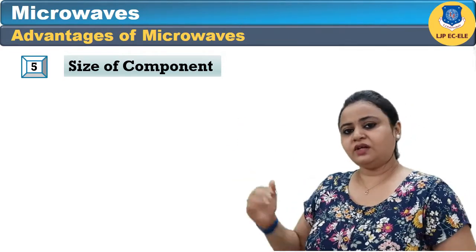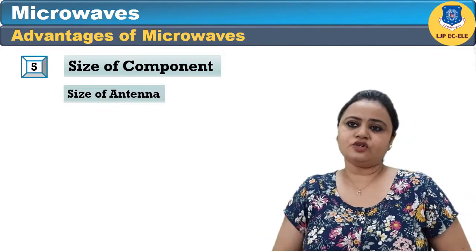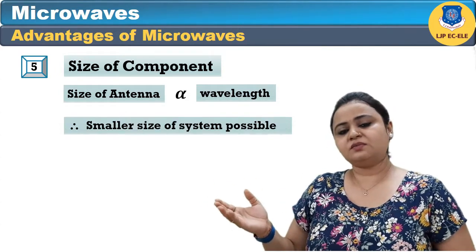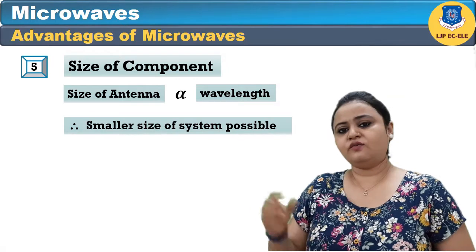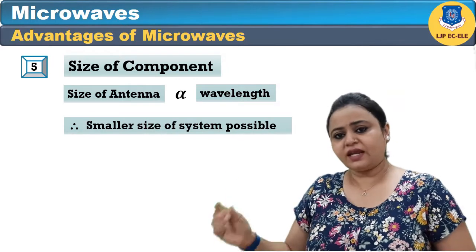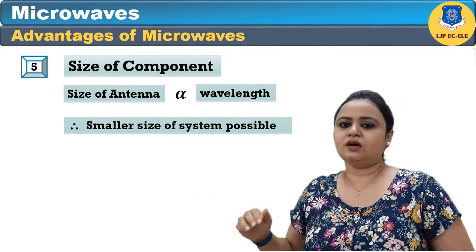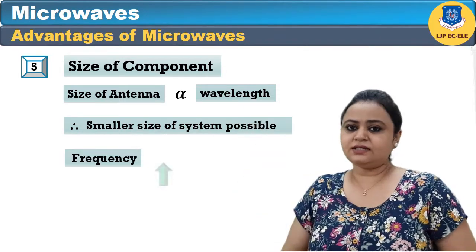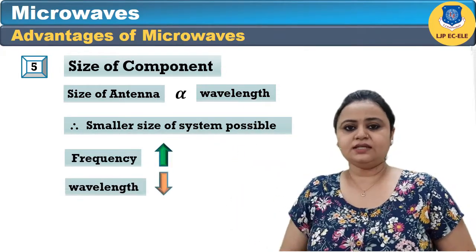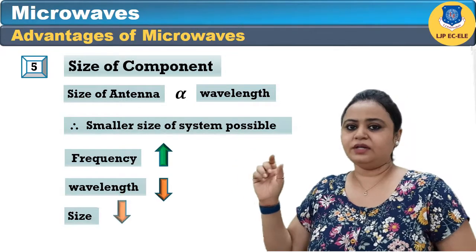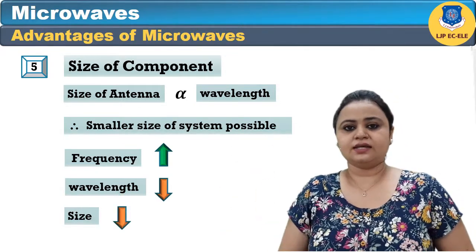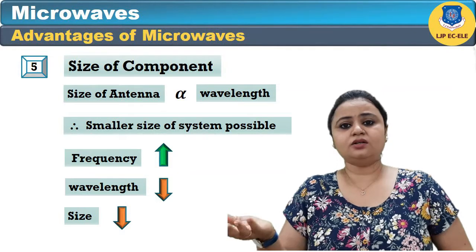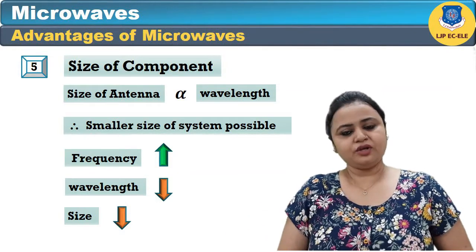The next advantage is the size of the component. Size of a component is directly proportional to wavelength, and since microwave wavelengths are very small, the size of the components will also reduce. As frequency increases, wavelength decreases and device size also decreases — for example, the mobile phones we carry also include microwave communication.